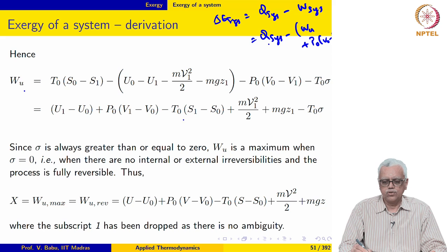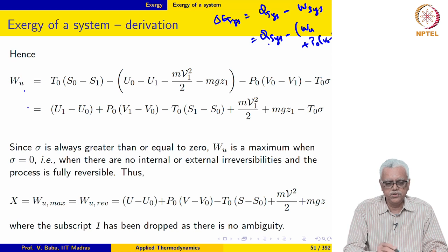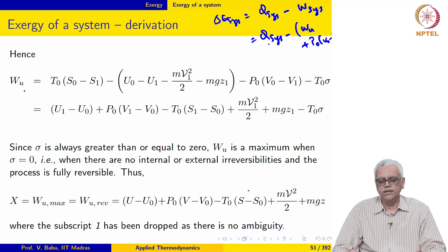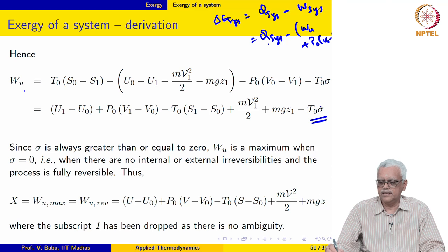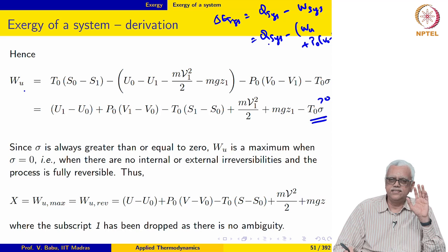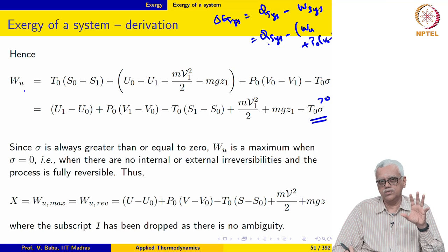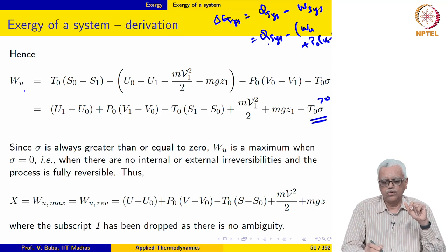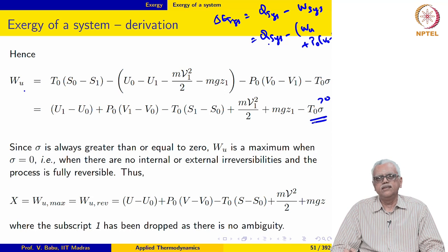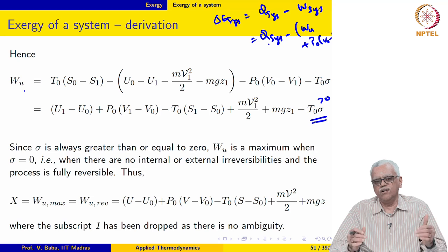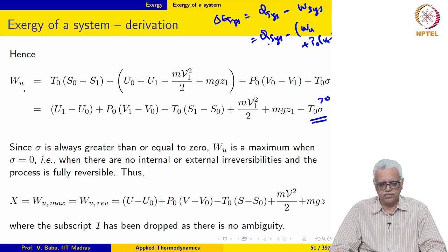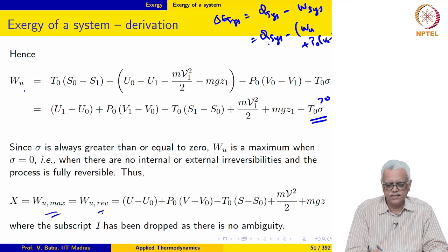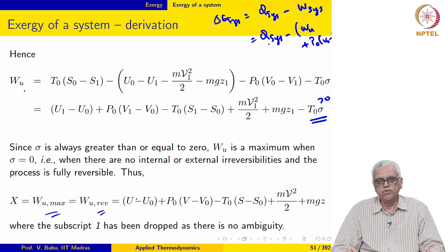W_U looks like this. Exergy of the system at state 1 is W_U max. Sigma is always greater than 0 — it is the amount of entropy generated in the universe as a result of internal and external irreversibilities, and both are accounted for. W_U will be a maximum when the process is completely reversible, meaning no internal or external irreversibilities, so sigma equals 0. W_U max may also be written as W_U reversible because all irreversibilities are absent.